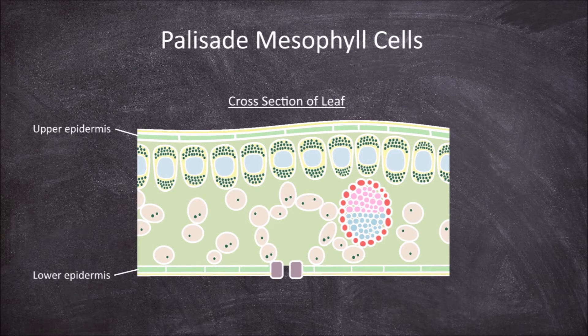The epidermis is spotted with stomata. A single stomate consists of two guard cells and a pore opening called the stoma.